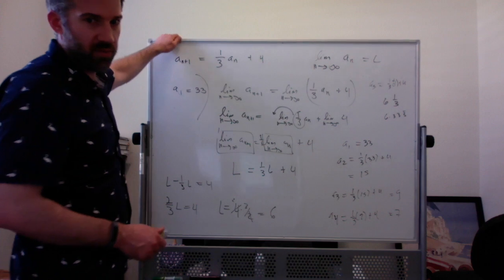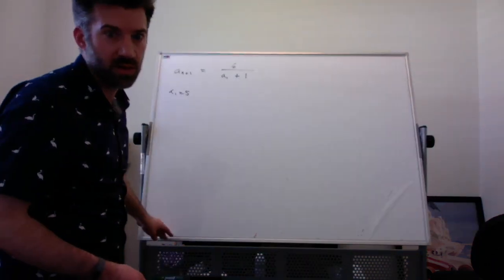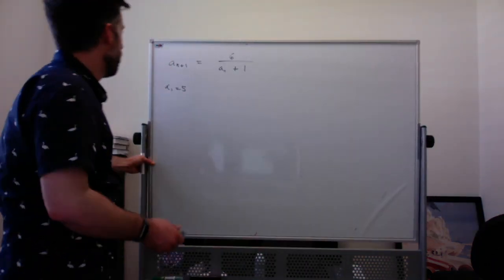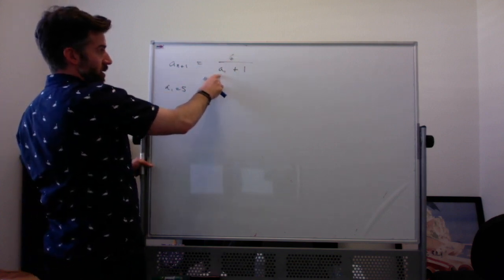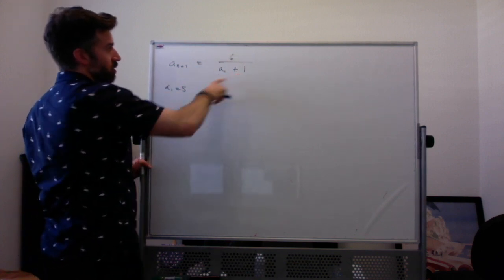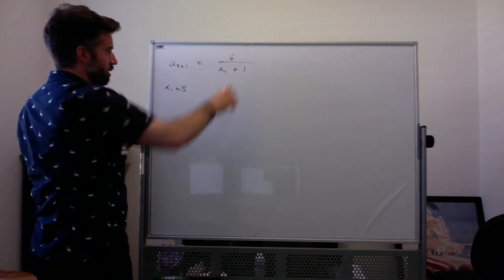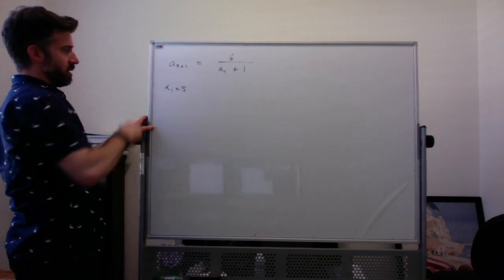Let's look at this other example I have, which is a little bit different, but still very similar. So I've got A sub n plus 1 equals 6 divided by A sub n plus 1. That's the nth term. And we're starting at A sub 1 equal to 5.